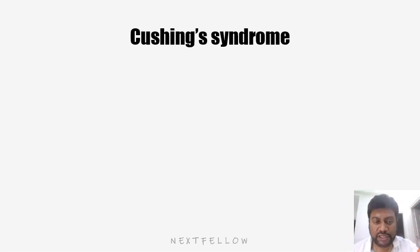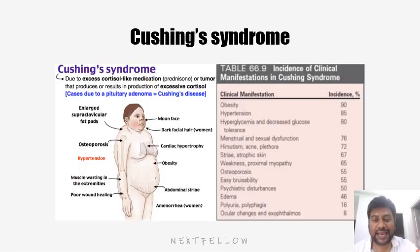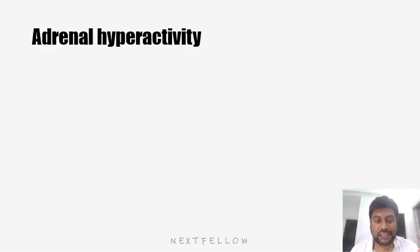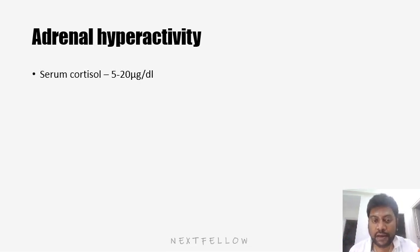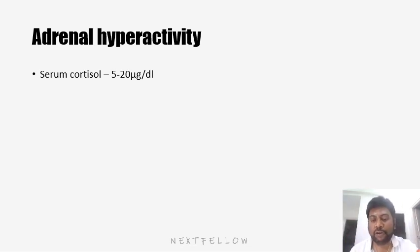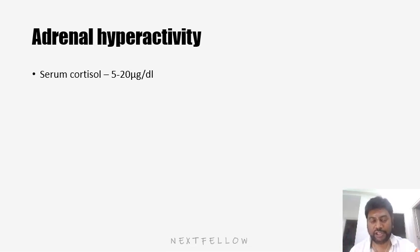First, let us start with Cushing's syndrome. Whenever a patient comes to you with signs and symptoms of Cushing's syndrome, first you should confirm that all these symptoms are due to adrenal hyperactivity. You can confirm this by measuring serum cortisol level. The normal serum cortisol level is 5 to 20 micrograms per deciliter. If it is more than 20 micrograms per deciliter, then you can confirm adrenal hyperactivity.